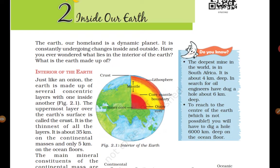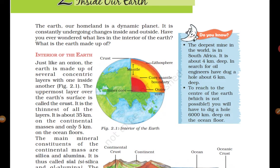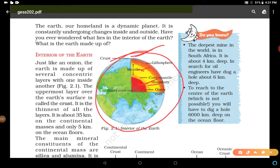The first diagram is the interior of the earth, in which you can see three layers of earth have been shown: crust, mantle, and core - inner and outer core. This is a very simple diagram you can make.